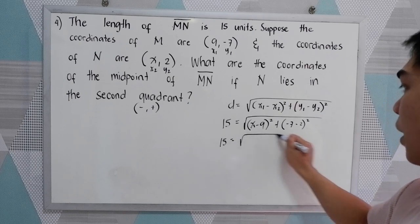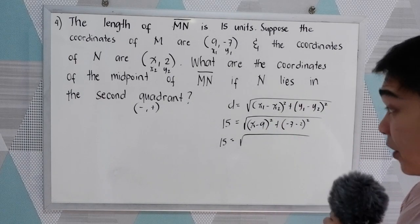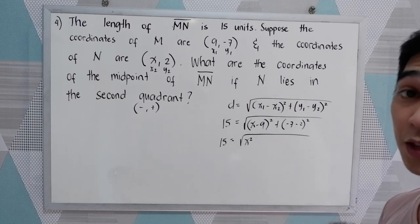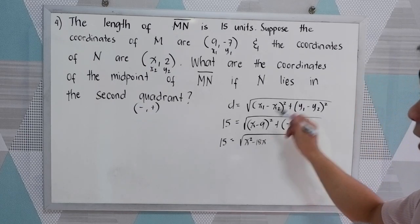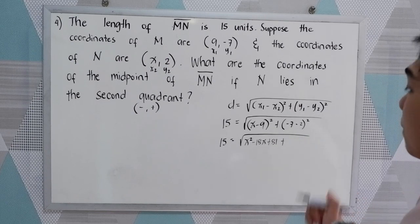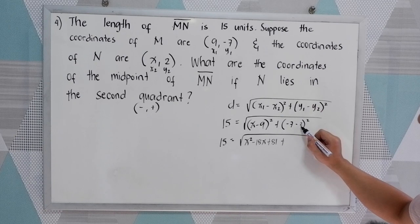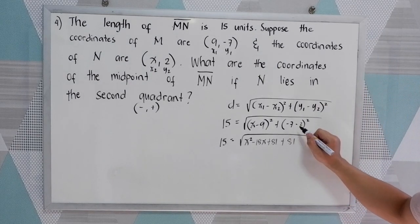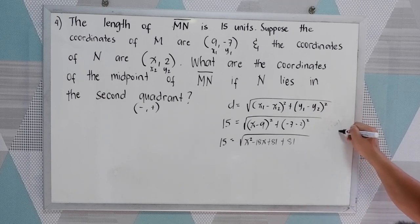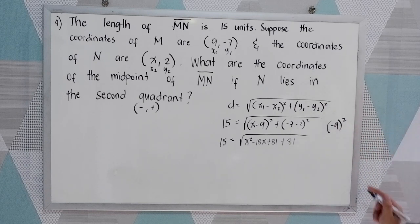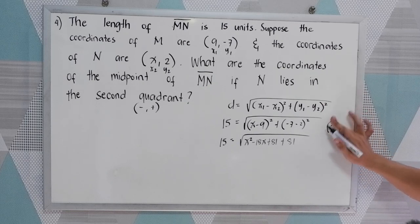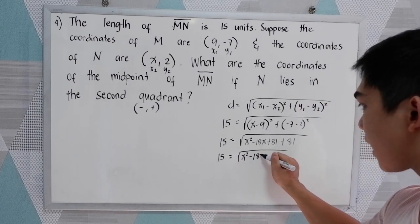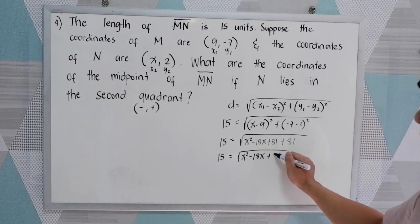So 15 equals the square root of a binomial expanded. Square the first term: x squared. Multiply first and second term times 2: x times negative 9 is negative 9x, times 2 gives negative 18x. Then negative 9 times negative 9 is positive 81. Plus, negative 7 minus 2 is negative 9, and negative 9 squared is 81. Combining: 15 equals the square root of x squared minus 18x, and 81 plus 81 is 162.